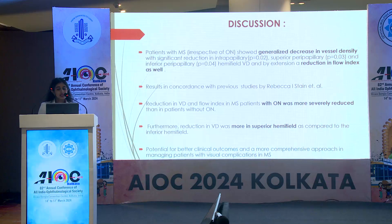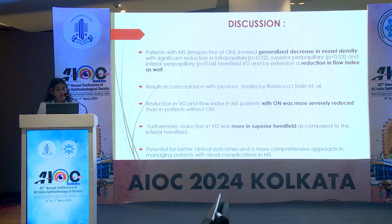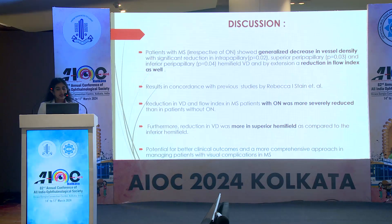In discussion, patients with multiple sclerosis, irrespective of optic neuritis, showed a generalized decrease in vessel density with significant reduction in the intrapapillary, superior peripapillary, and inferior peripapillary hemifields, and by extension, a reduction in flow index as well. Our results were in concordance with previous studies by Rebecca Steyn et al. Reduction in vessel density and flow index in multiple sclerosis patients with optic neuritis was more severely reduced than in patients without. Furthermore, reduction in vessel density was more seen in the superior hemifield compared to the inferior hemifield, suggesting potential for better clinical outcomes and a more comprehensive approach in managing patients with visual complications in multiple sclerosis.